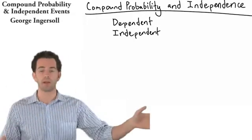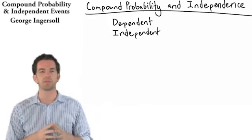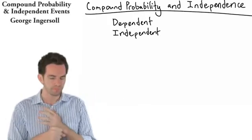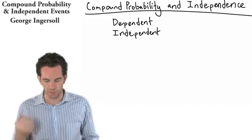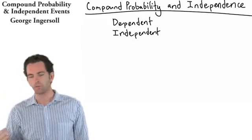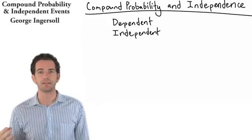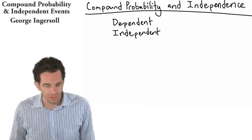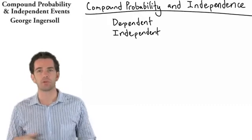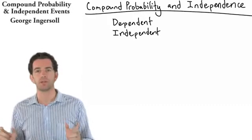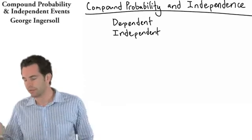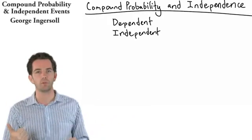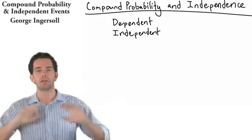Let's start off by talking about independent events because they're actually the simpler type to deal with in compound probability. If I have a six-sided die and I roll it once and then roll it again, whatever I got on the first roll — event A — has no bearing on whatever I got on my second roll, event B. So there is no relationship between those two events. You're not going to make a bet on the second roll based on the first roll. Those are independent events — roll one is event A, roll two is event B: independent.